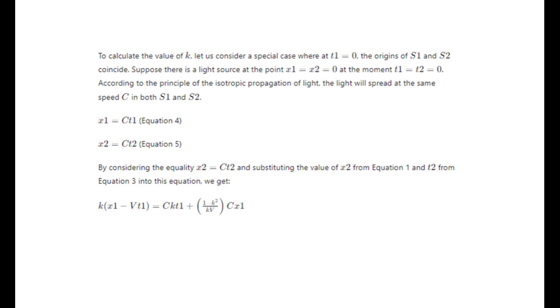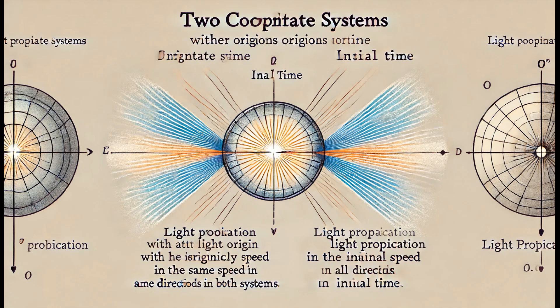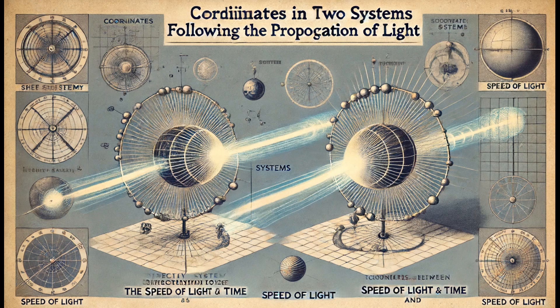We start by assuming that at some initial time, the origins of both coordinate systems coincide. At that exact moment, there is a light source at the origin. Light propagates isotropically, meaning it travels at the same speed in all directions in both coordinate systems. For this scenario, we assume that the coordinates in each system follow the propagation of light.